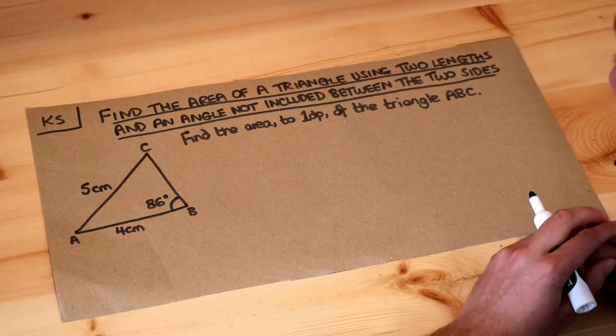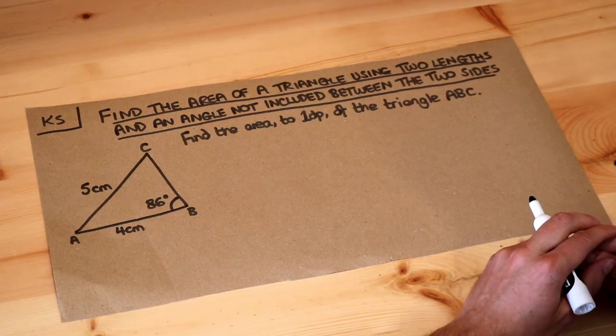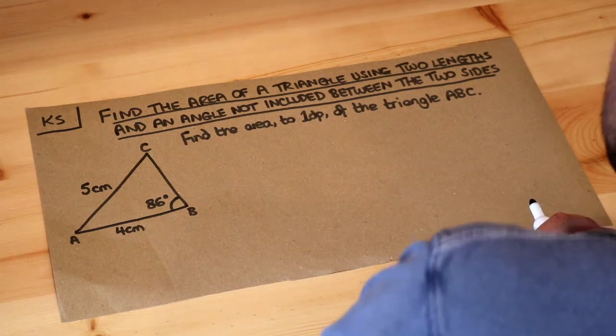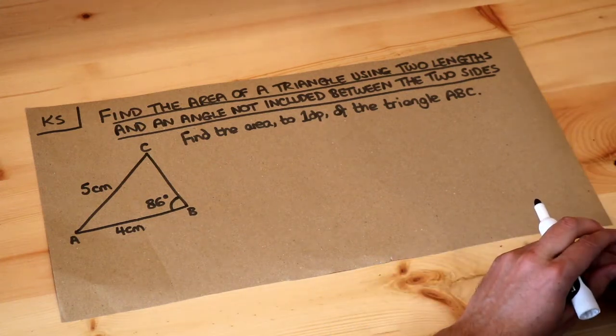Hello and welcome to this Dr Ross Maths key skill video on finding the area of a triangle using two lengths and an angle not included between the two sides.